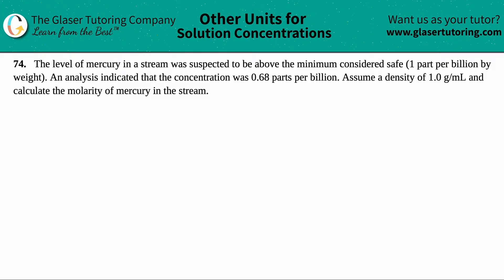Number 74: the level of mercury in a stream was suspected to be above the minimum considered safe — one part per billion by weight. An analysis indicated that the concentration was 0.68 parts per billion. Assume a density of 1.0 grams per mL and calculate the molarity of mercury in the stream.